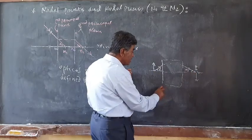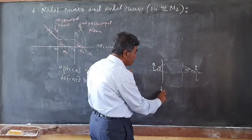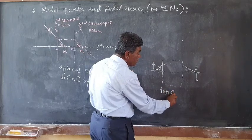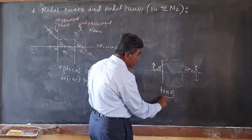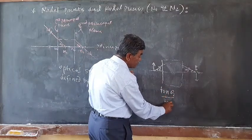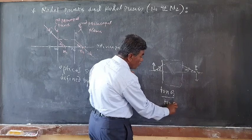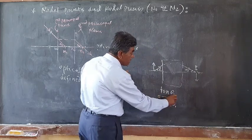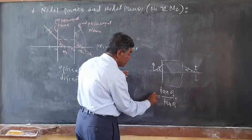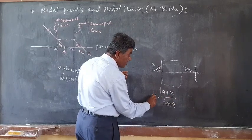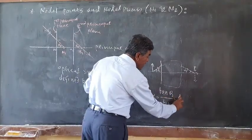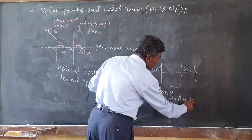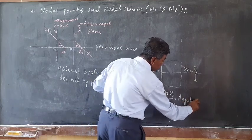The ratio tan(theta two) divided by tan(theta one) is known as the angular magnification, denoted by alpha.